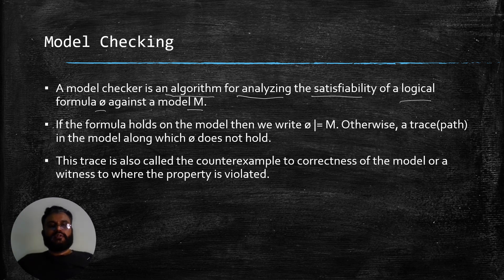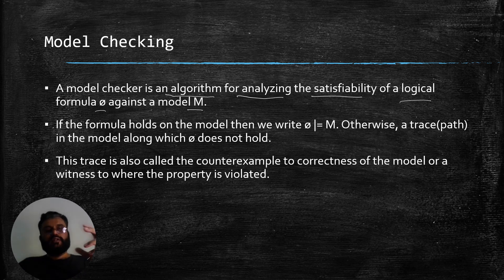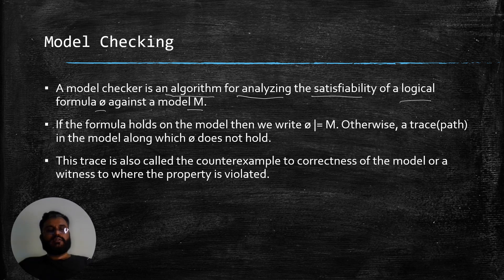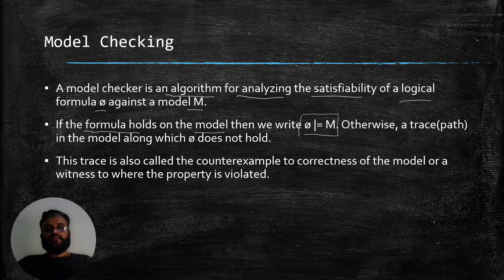The model M is going to be a formal model. There are different formalisms, so the choice of formulas will depend upon a specific model checker. For example, you can use timed automata for a specific model checker which handles that kind of formalism. Likewise, you can also use finite state machines or Kripke structures for modeling the behavior of certain reactive systems. What a model checker does is analyze whether this formula holds on the model, represented as phi satisfies a given model M.